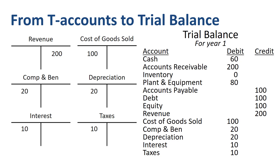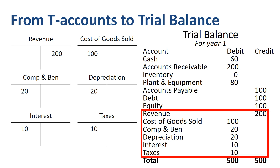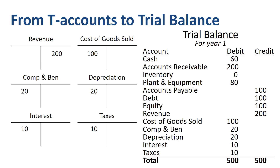A trial balance is not the same as a balance sheet — a trial balance lists balance sheet as well as income statement accounts. Now add up all amounts on the debit side and all amounts on the credit side, and we get to the same number of 500 on each side. Our trial balance is balancing. As you can see, net income itself is not a trial balance amount — it is represented by the individual income statement accounts. Net income is added to retained earnings in equity at a later stage, once we prepare the financial statements.